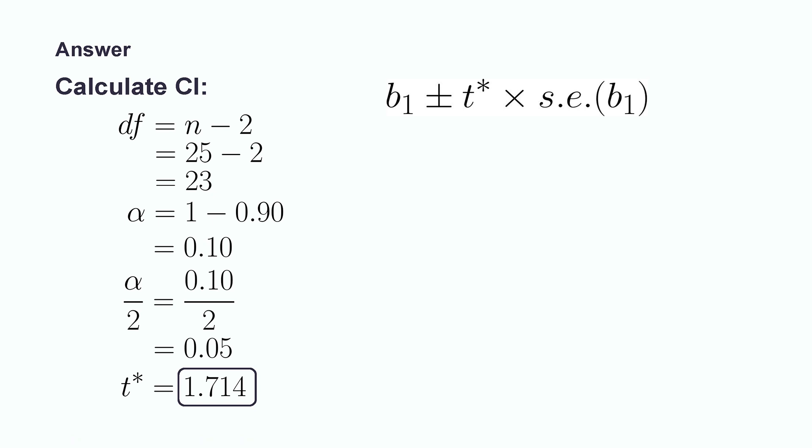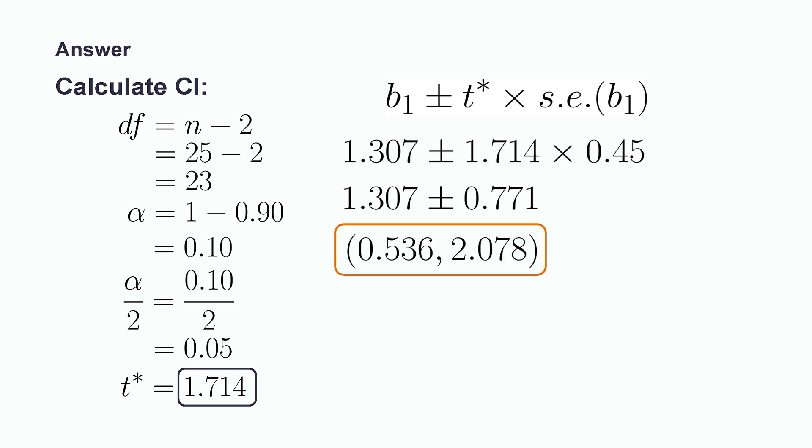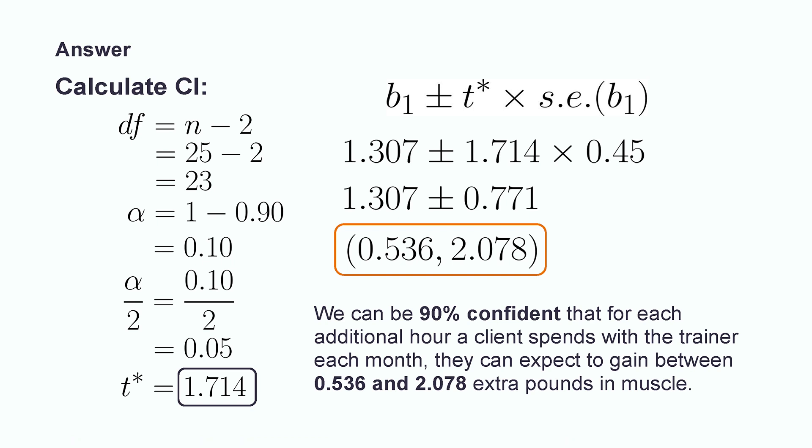Now that we have all the necessary values, we can compute the confidence interval. Using our formula, we plug in the value for beta1, t-star, and the standard error of beta1. This gives us an interval of 0.536 to 2.078. With this interval, we can determine that we are 90% confident that for each additional hour a client spends with a trainer each month, they can expect to gain between 0.377 and 2.237 extra pounds in muscle.